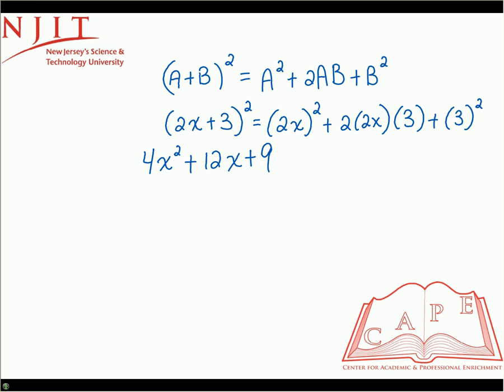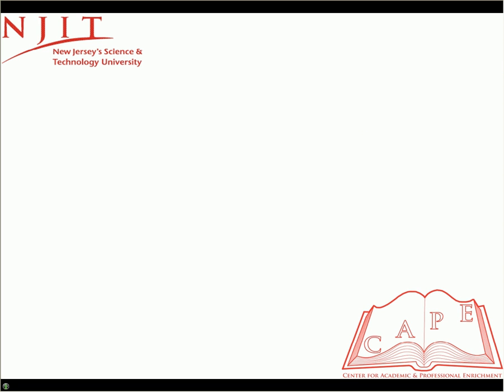Let's do one more example similar to this and then we'll move on to binomial differences. Say we had (3x+2) whole quantity squared. Let's apply the formula.